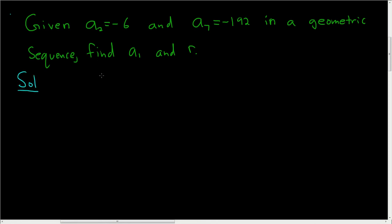The trick is to first find r using a sub 2 and a sub 7. So a sub 7 is equal to a sub 2, and how many times do we have to multiply a sub 2 by r in order to get to a sub 7? Well, 5 times, or rather we need 5 copies of r.